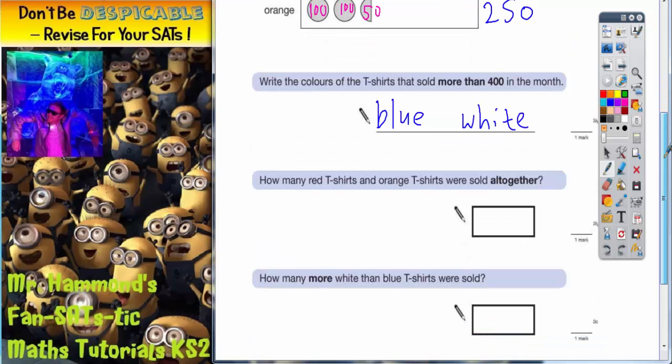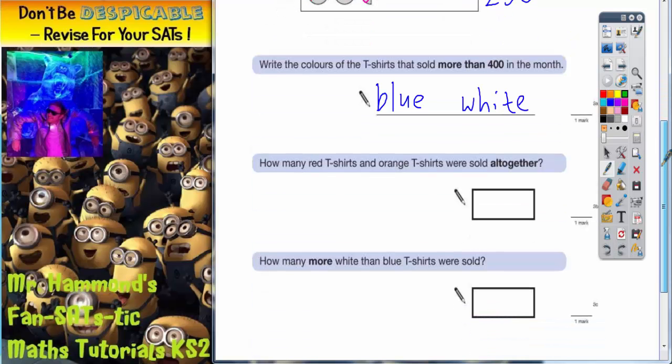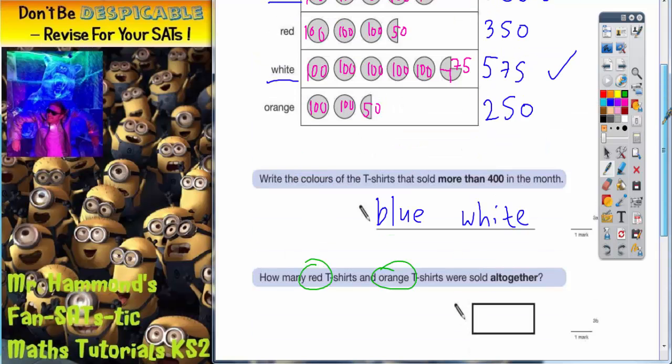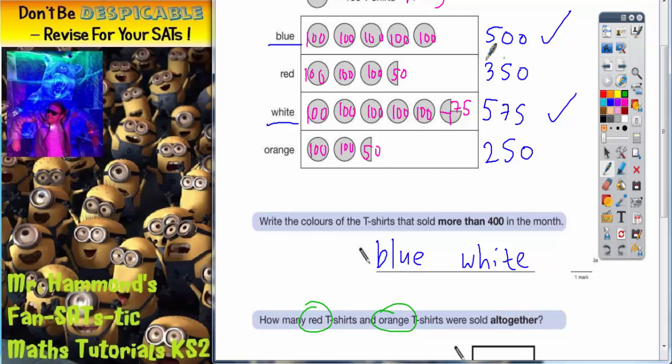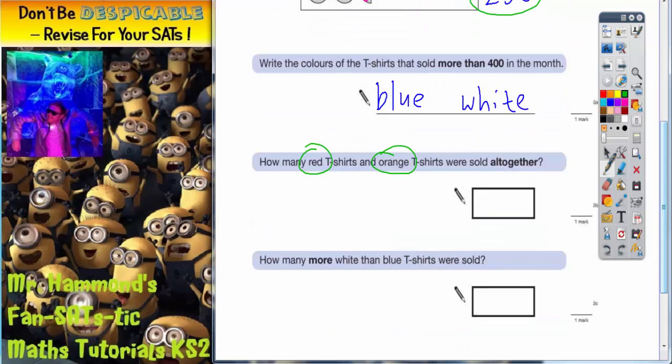Next question. How many red t-shirts and orange t-shirts were sold altogether? Red and orange. So let's get the correct numbers. Red is 350 and orange is 250. So we need to add those together. 350 add 250. You may be able to do it in your head and get 600.